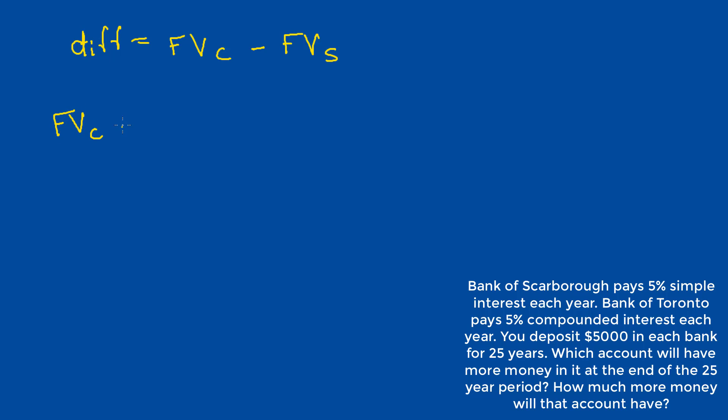The future value of the compound interest account would be given to us by the expression present value times 1 plus the rate raised to the number of periods. So, we would just plug in our values of 5,000 times 1.05 raised to 25, which should give us $16,931.77.